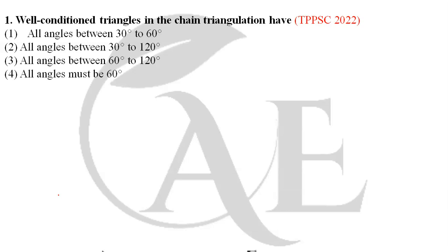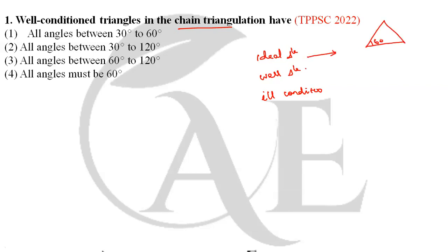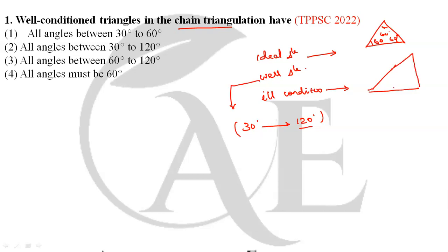Moving on to the first question: well-conditioned triangles in chain triangulation. There are three types: the ideal triangle, the well-conditioned triangle, and the ill-conditioned triangle. In an ideal triangle, all angles are equal at 60 degrees. For a well-conditioned triangle, all angles must lie between 30 degrees and 120 degrees — not less than 30° and not greater than 120°. An ill-conditioned triangle has a very sharp angle, for example 20°, 20°, 130°, and is not used. So the correct answer is: all angles between 30° and 120°, option 2.